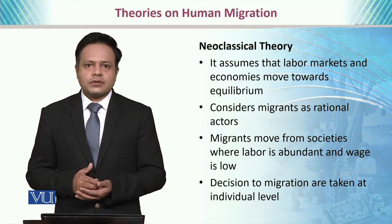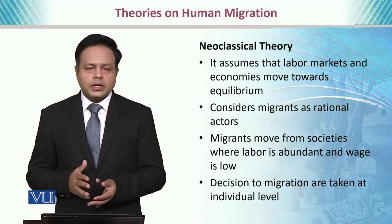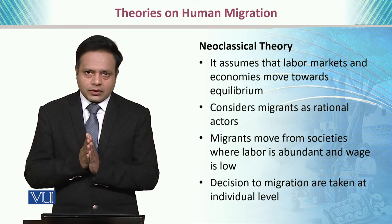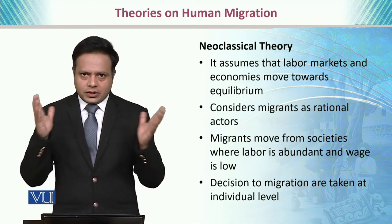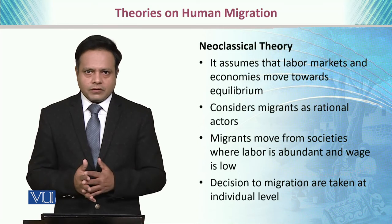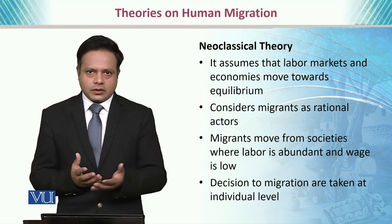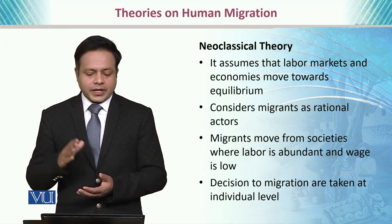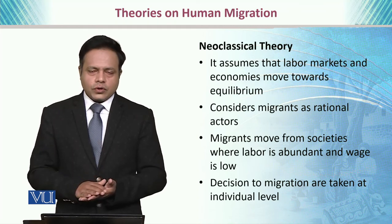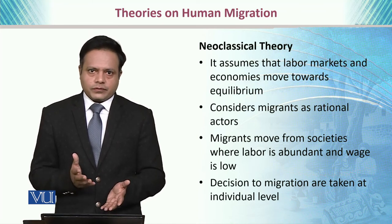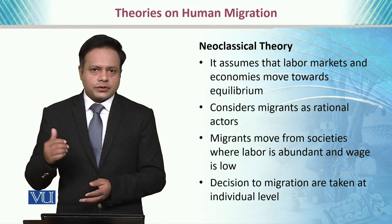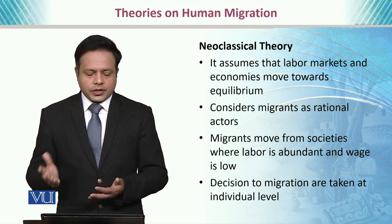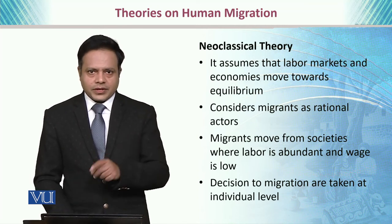We also have the neoclassical theory, which assumes that labor markets and economies move towards a state of equilibrium. It considers migrants as rational actors — they are not simply acting based on push or pull factors, but rationally decide about migration by calculating their chances of acquiring the benefits of migration in a certain place. Migrants move from societies where labor is abundant and wages are low, and decisions to migrate are usually taken at the individual level.